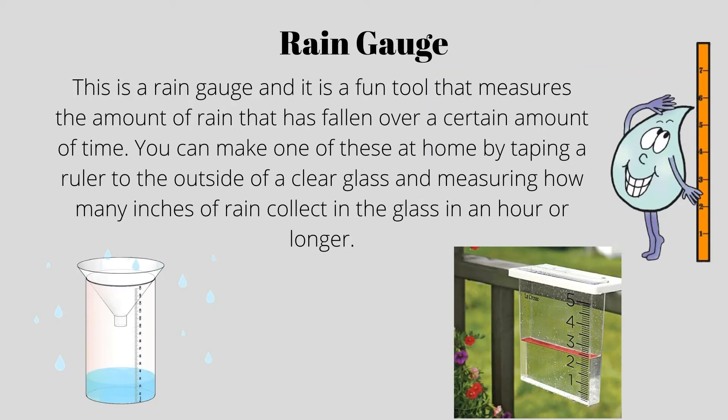This is a rain gauge, and it is a fun tool that measures the amount of rain that has fallen over a certain amount of time. You can make one of these at home by taping a ruler to the outside of a clear glass and measuring how many inches of rain collect in the glass in an hour or longer.